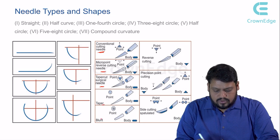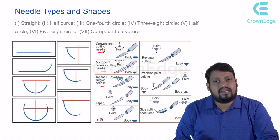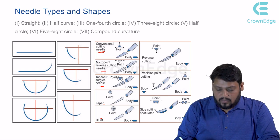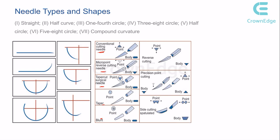Every needle type has its own purpose. A conventional cutting needle has its cutting edge on the inside — if you take a cross-section of the needle, the cutting edge faces inward, toward the concave side of the curve.